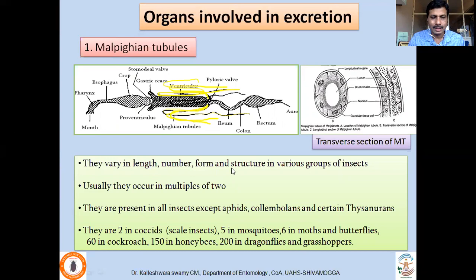Malpighian tubules vary in length, number, form, and structure in various groups of insects. They usually occur in multiples of two, but there are exceptions: 2 in scale insects, 5 in mosquitoes, 6 in moths and butterflies, 60 in cockroaches, 150 in ants, and 200 in dragonflies and grasshoppers. Many insects lack Malpighian tubules, such as aphids, collembolans, and certain silverfish (thysanurans).